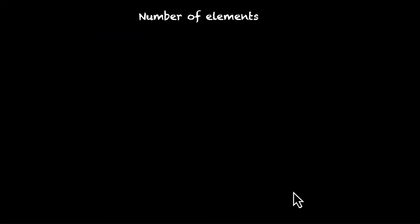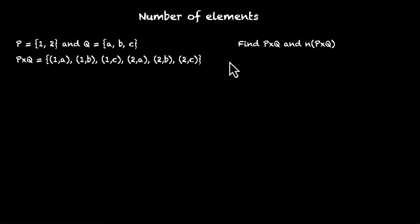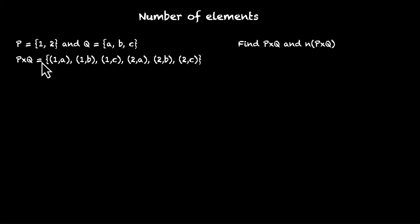Let's find the number of elements of a few Cartesian products. The first one: P is {1, 2} and Q is {A, B, C}. Let's find the Cartesian product P times Q and its number of elements. P times Q is this set. We start with 1: we get (1,A), (1,B), (1,C), and then (2,A), (2,B), (2,C). Note that we don't have (A,1) — we are moving from P to Q, so the first element will always be from P and the second element will always be from Q. We have these six elements, and 2 times 3 is 6, so the number of elements is 6.